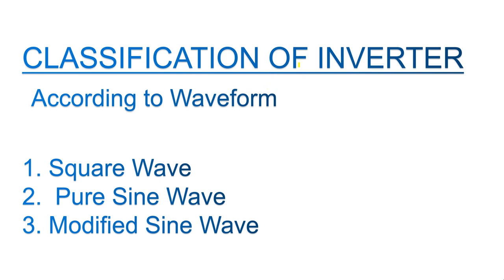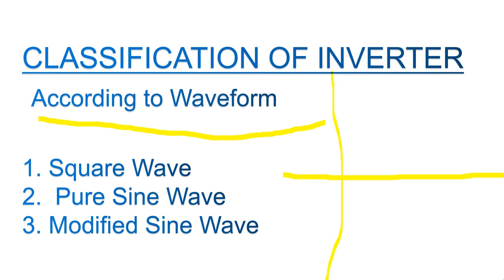Now, classification of inverters — how we can choose the right inverter for our house and load. According to the waveform, in AC you will see there is a sine wave. Based on the waveform, we have three types of inverter: one is square wave, second is pure sine wave, and third is modified sine wave. We will discuss each one by one.